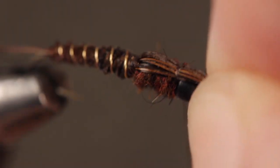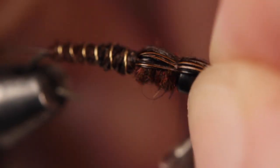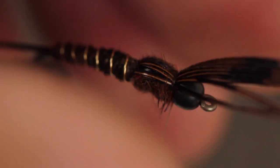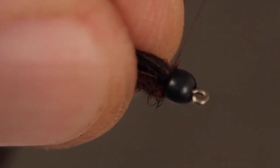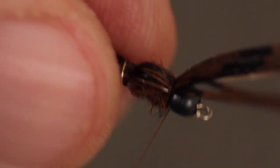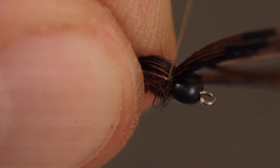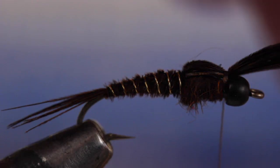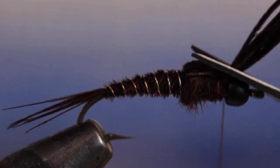Pull the pheasant tail over to form a substantial wing case and anchor it with a couple tight turns of tying thread. Lift the butts up and take a single wrap under the fibers and then a few more over top. You really want to make sure these fibers are locked down firmly before you reach in with your tying scissors and snip the butt ends off.